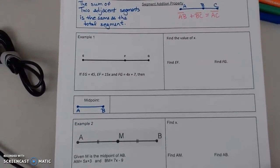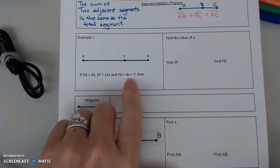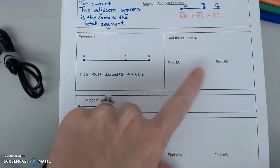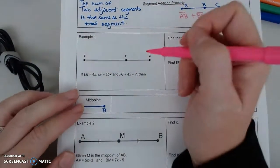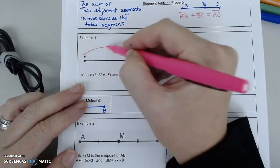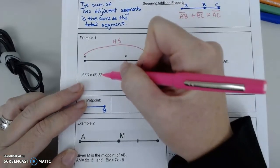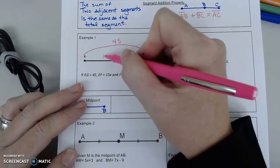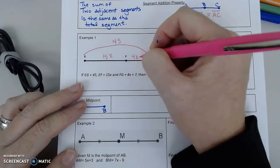All right, so let's look at example one. Again, I always need to label the information they give me. And then you want to make sure that you answer the question that's being asked. That's the most common error that I see. So it says that EG, which is the whole thing, is equal to 45. E to F is equal to 15X. And FG is equal to 4X plus 7.